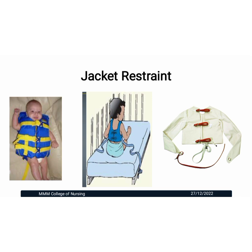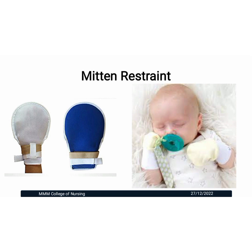Jacket restraint is very commonly used on children and elderly patients. The jacket has tags that are tied along with the cot. The patient is allowed to do all activities on the bed — they can sit, eat, and perform anything — only they cannot get out of the bed. Mitten restraints are very commonly used in small children to avoid thumb sucking and pulling out the NG tube and IV tubings. They can also be used on adult patients to prevent pulling of NG tubing, IV cannulas, and other treatment devices.